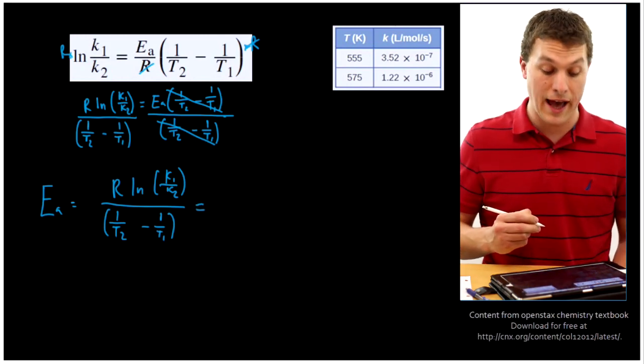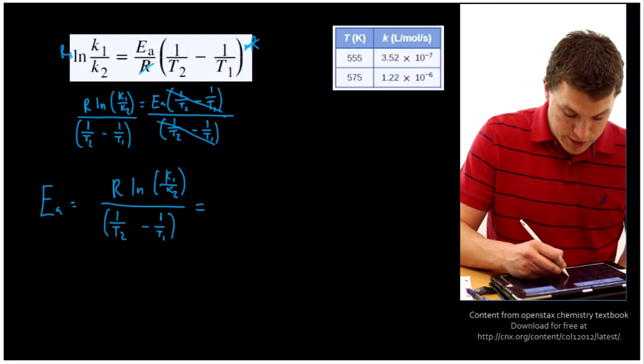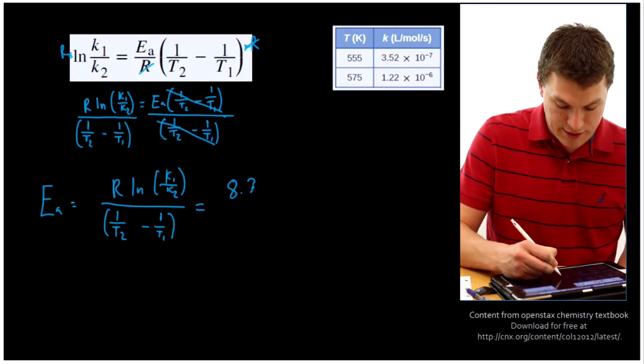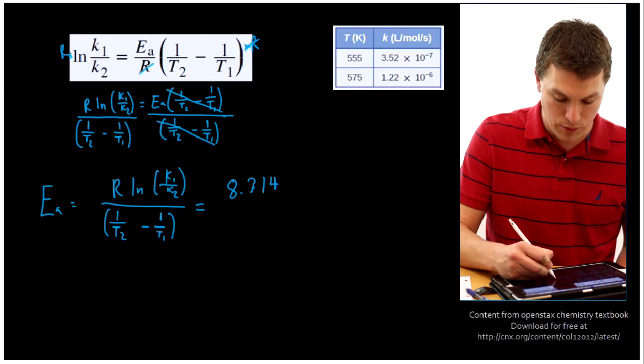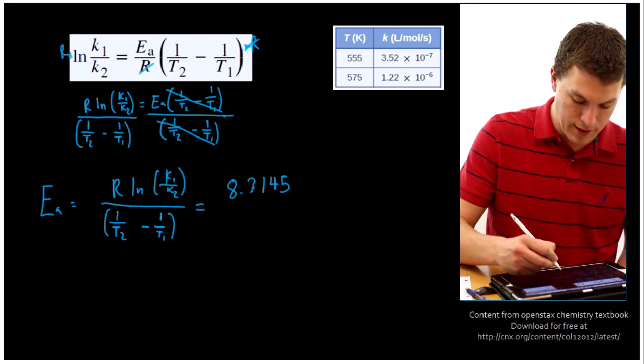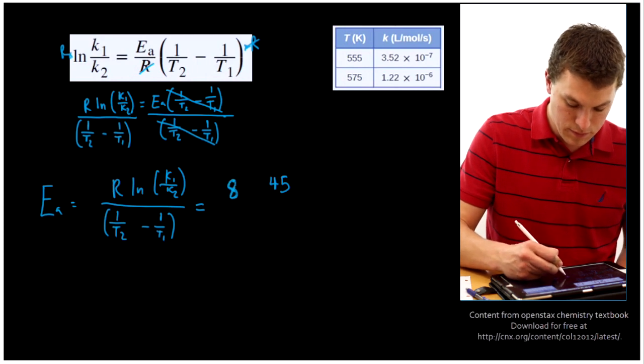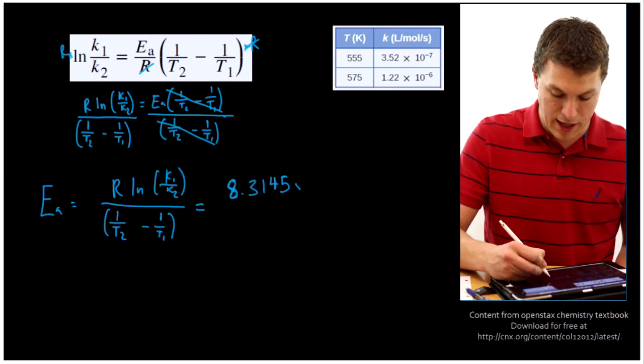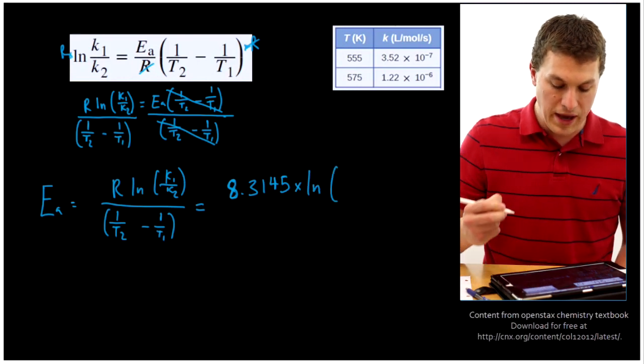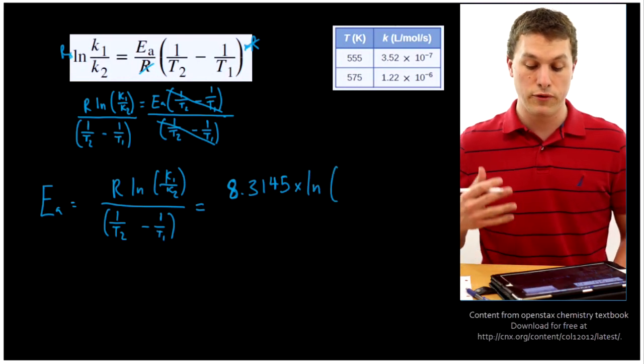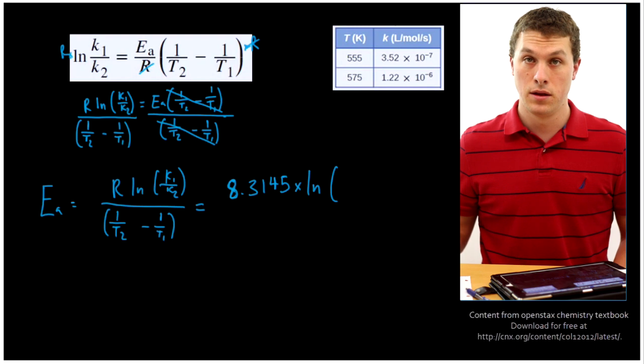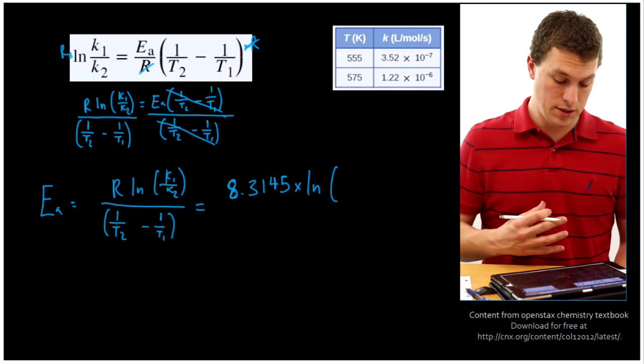So R is our gas constant, and we always use with this equation the one that is in joules per mole kelvin, which is 8.3145. Let's get a nicer 3. And so that's for gas constant times the natural log. And then the main thing we need to keep track of here is if whatever we plug in for k, we need to plug in the matching t.